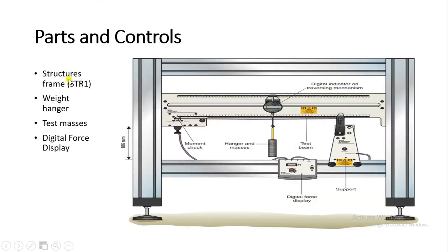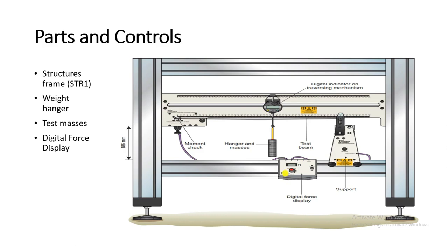The structural frame STR-1 is essential for every structure product provided with this module. The weight hanger is used to apply weights on various sides and lengths of the beam; different numbers of test masses are provided for various experiments. The digital force display takes output readings from the load cells and displays them, and can also display readings on the STR-2000 structure software.